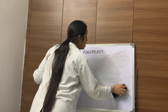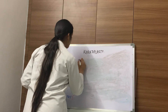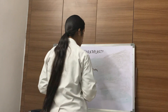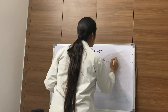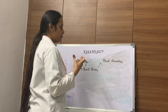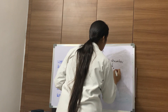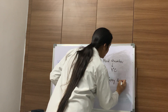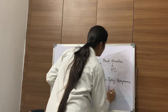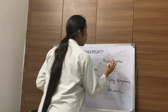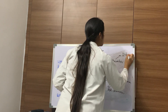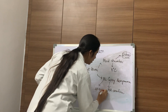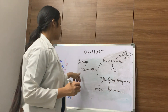After taking out the cornea, how do you store it? For short-term storage, there are two methods. First, the entire globe can be placed in a moist chamber at 4 degrees centigrade — the cornea will stay viable for up to 24 hours. Second, McCarey-Kaufman (MK) medium can be used, in which the cornea can stay viable for 48 to 72 hours. Beyond 72 hours, short-term methods cannot be used.